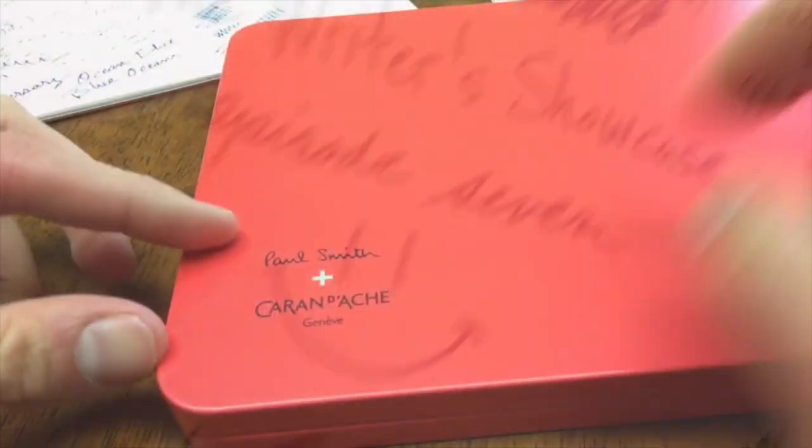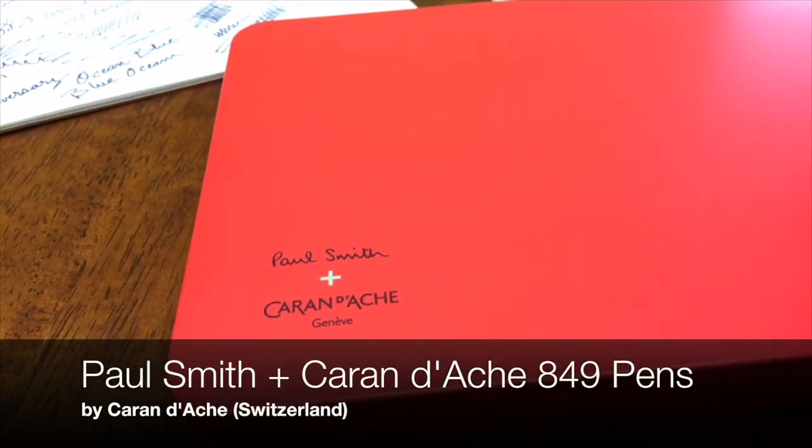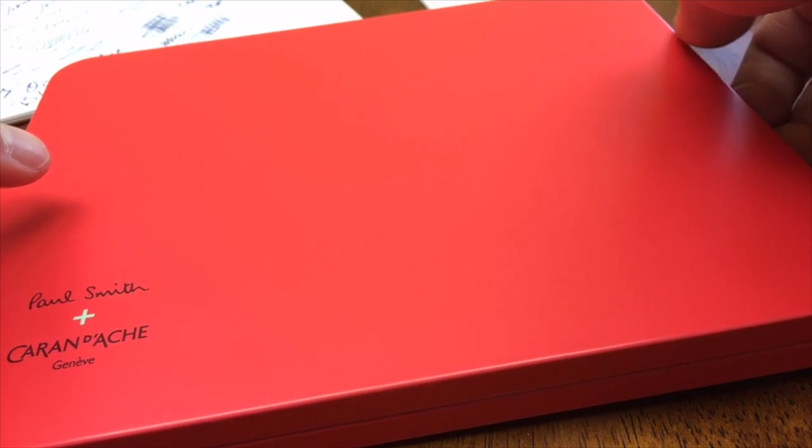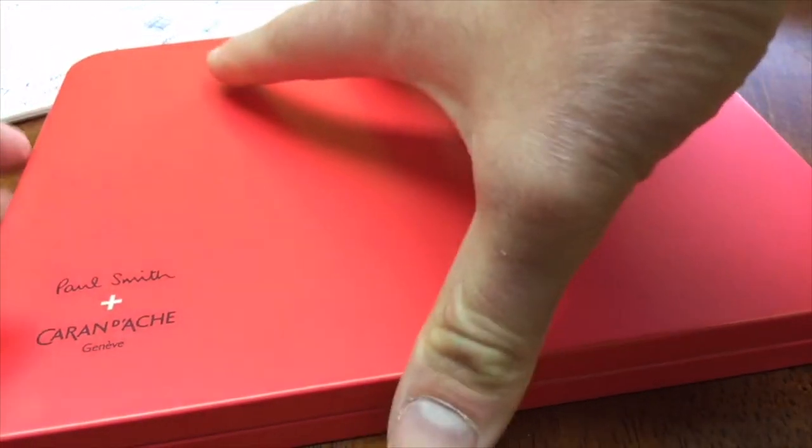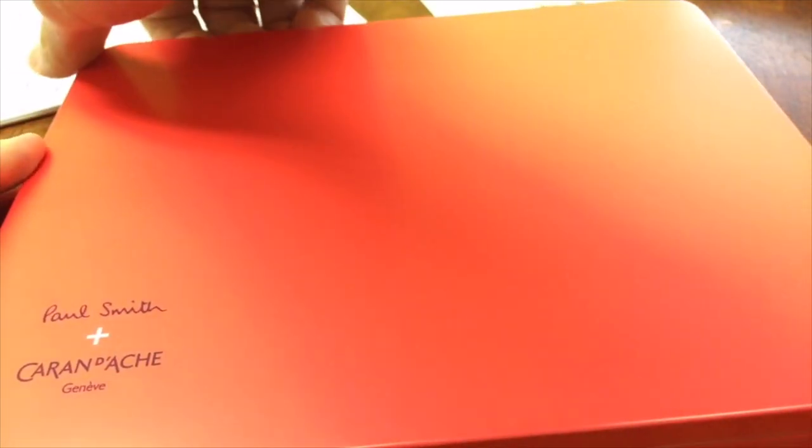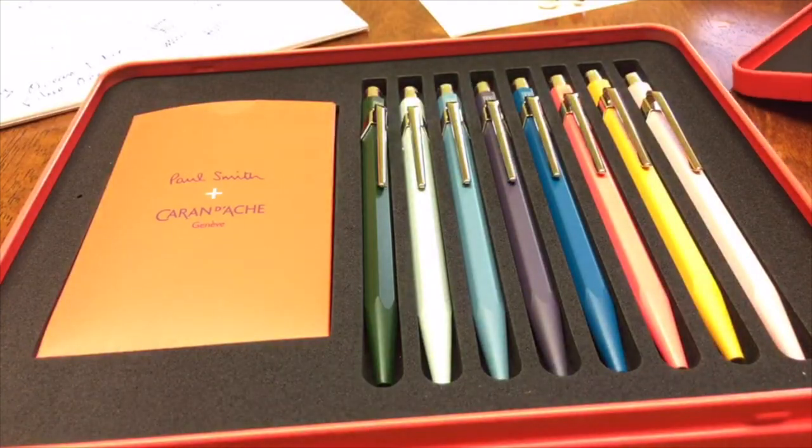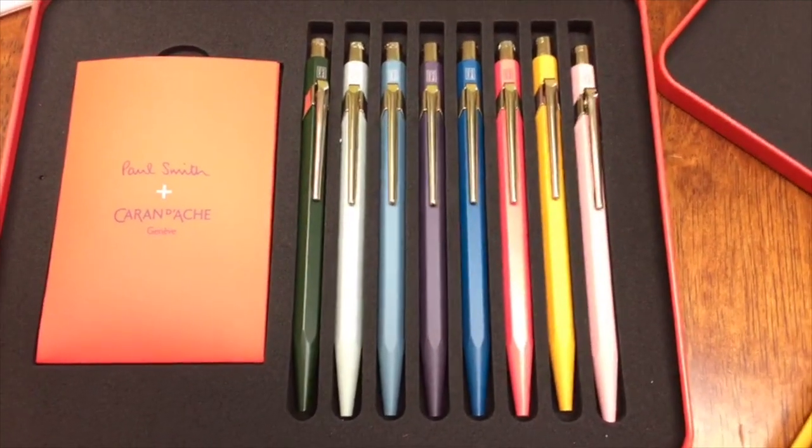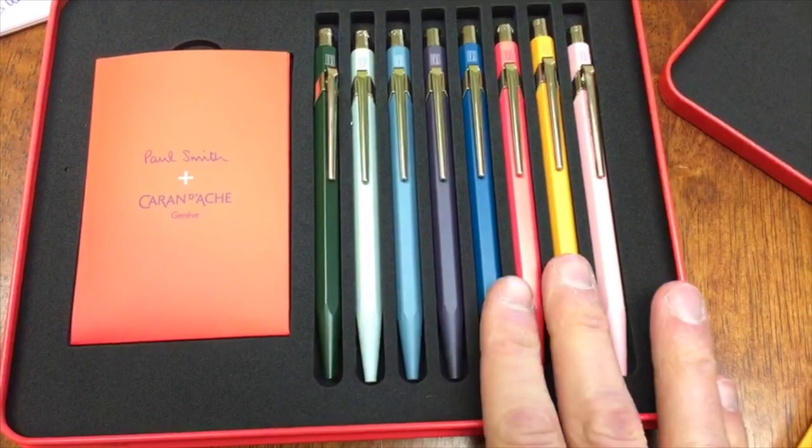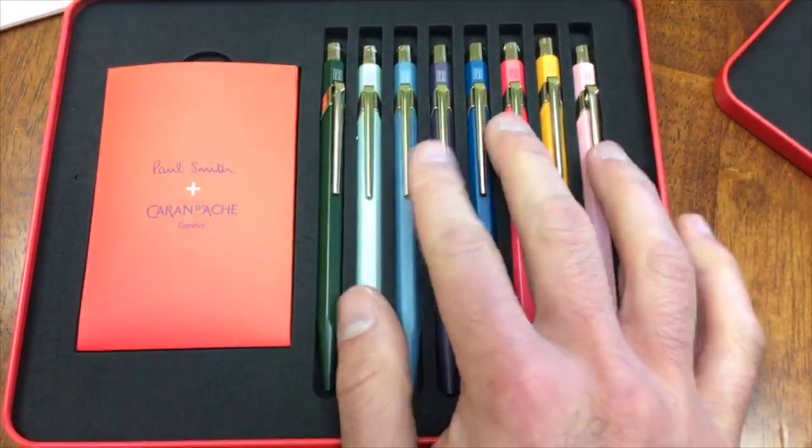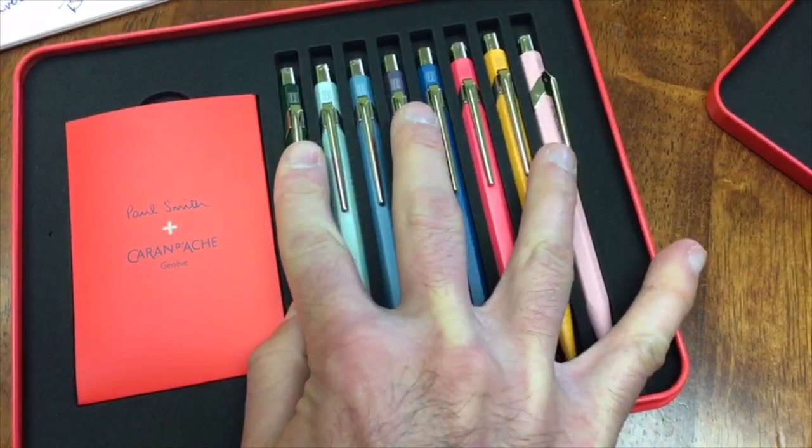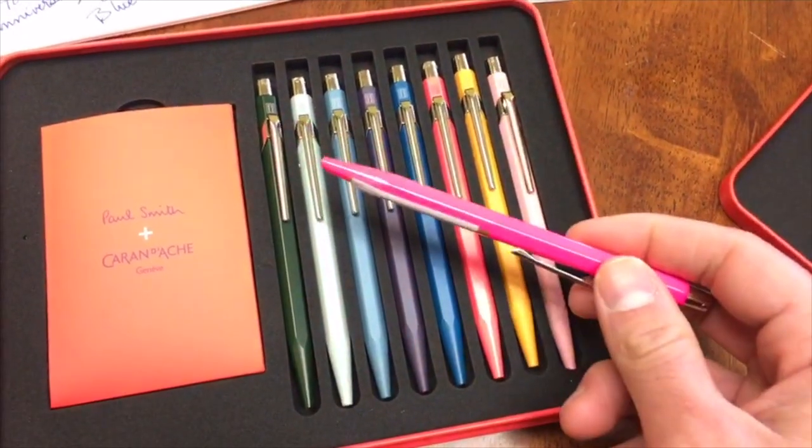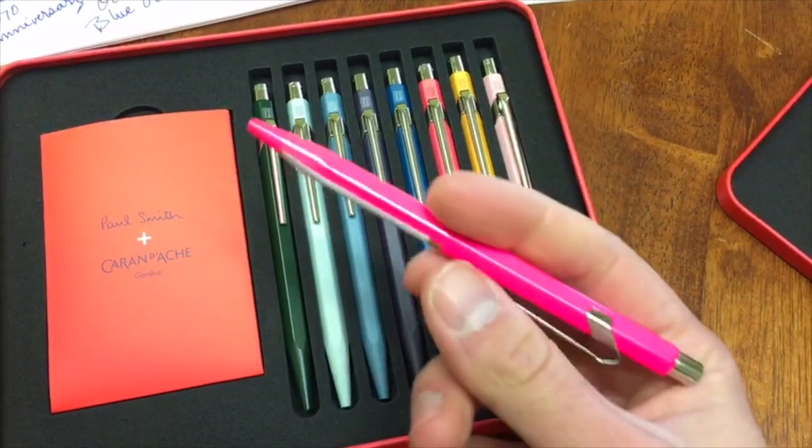This is Paul Smith and Caran d'Ache collaboration. This is a set that we obtained that has all of the different colors, although the colors are sold individually. This is version two of this collection. Version one was a limited edition that sold out last year. This set came out late last year and we're just picking up on the inventory now.